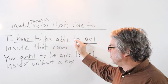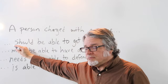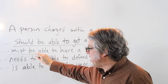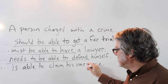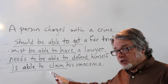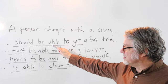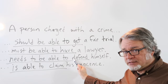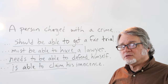Here are more examples combining modal phrases with be able to and a main verb: 'I have to be able to get inside that room,' 'You ought to be able to get inside without a key.' For a person charged with a crime: 'should be able to get a fair trial,' 'must be able to have a lawyer,' 'needs to be able to defend himself,' 'is able to claim his innocence.' These are all verb phrases — remember that a verb phrase is made up of more than one word. For example, 'should be able to get' is five words, 'needs to be able to defend' is six words.